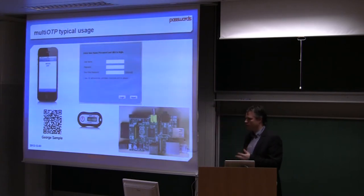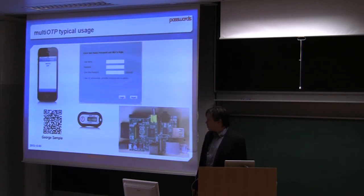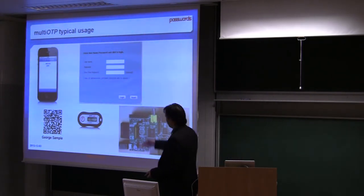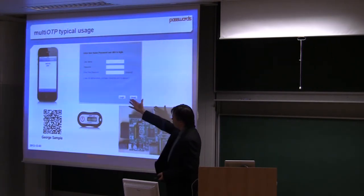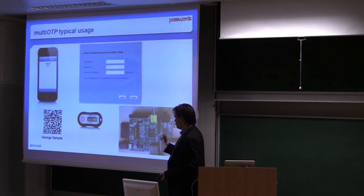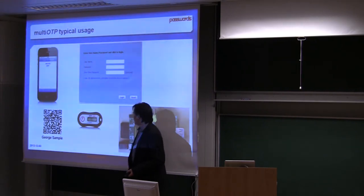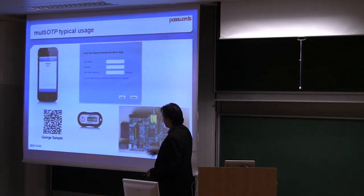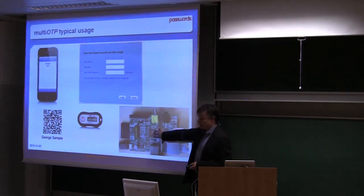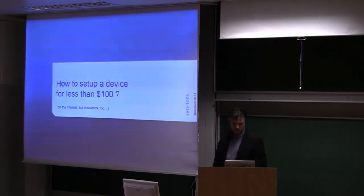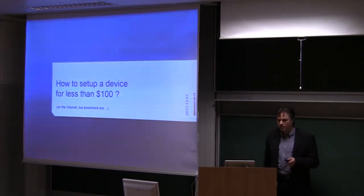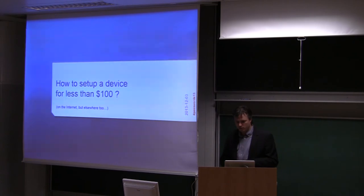Typical usage: you can have a firewall there and you have your token on your phone or as a hardware token. You just log on your firewall and you have access to your server. The server, as we can see just after, could be a Raspberry Pi. So how to set up a device for less than $100, which is the key today.